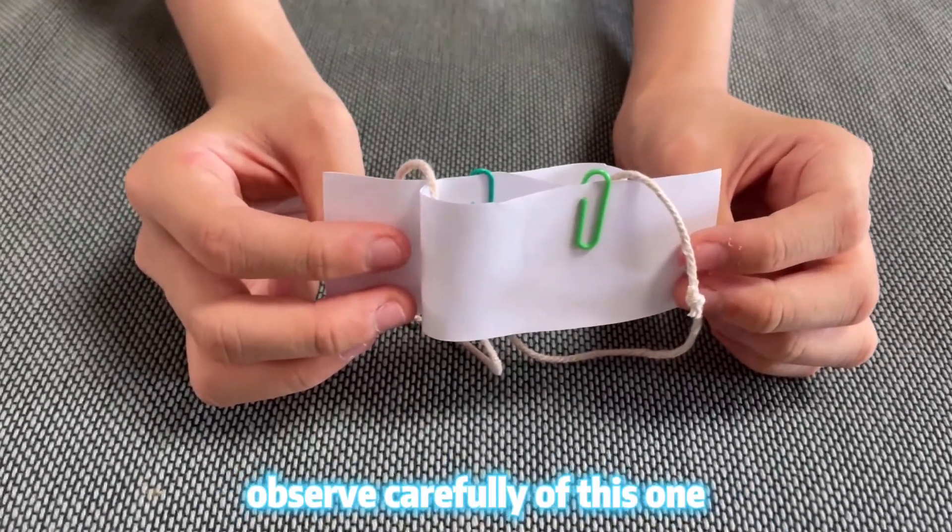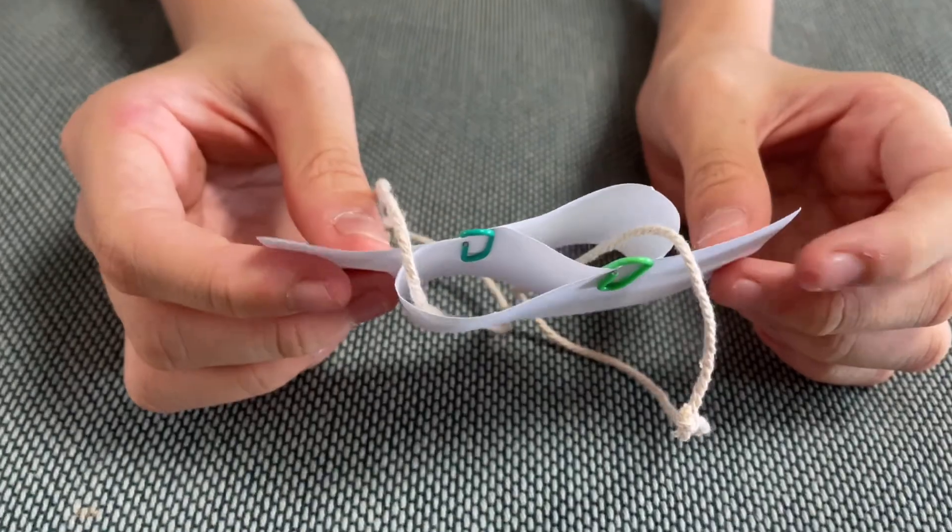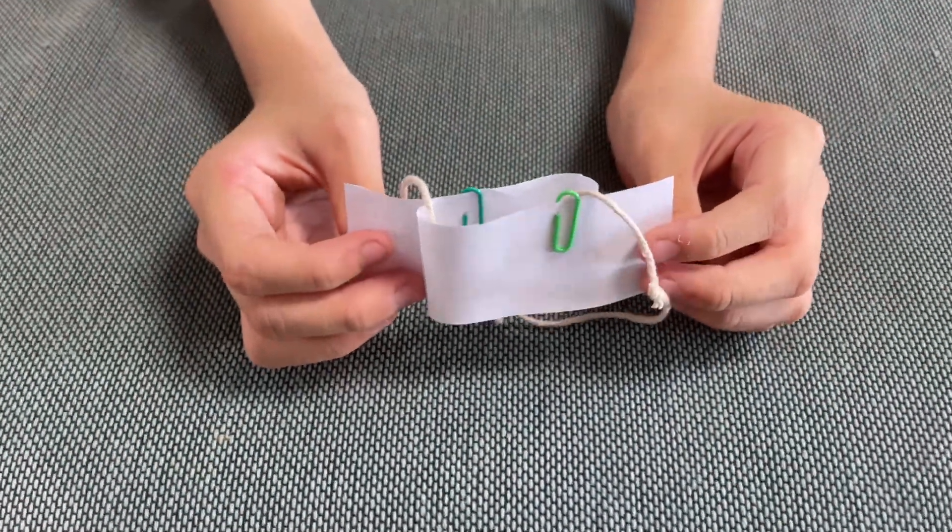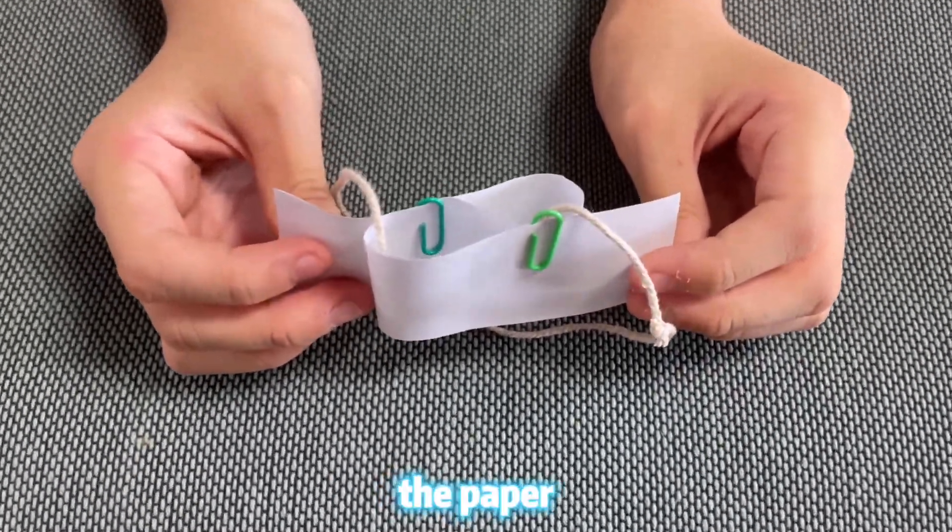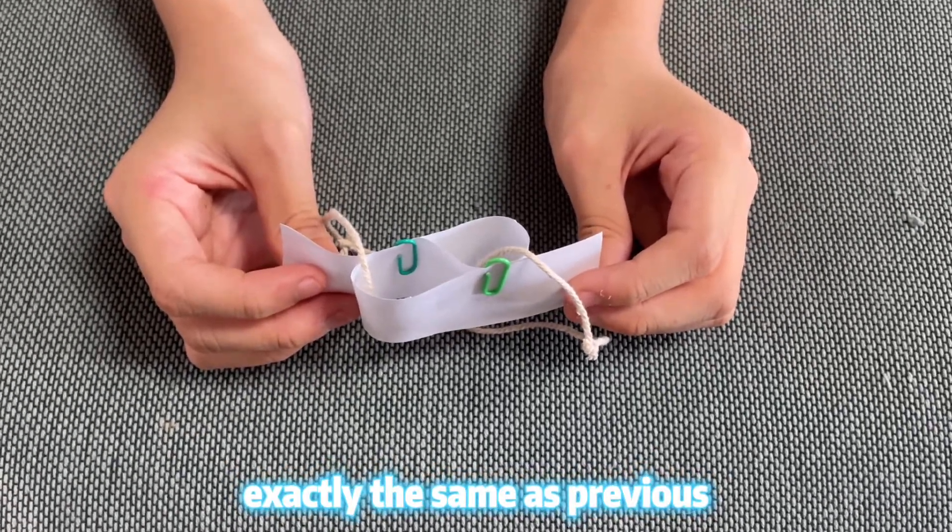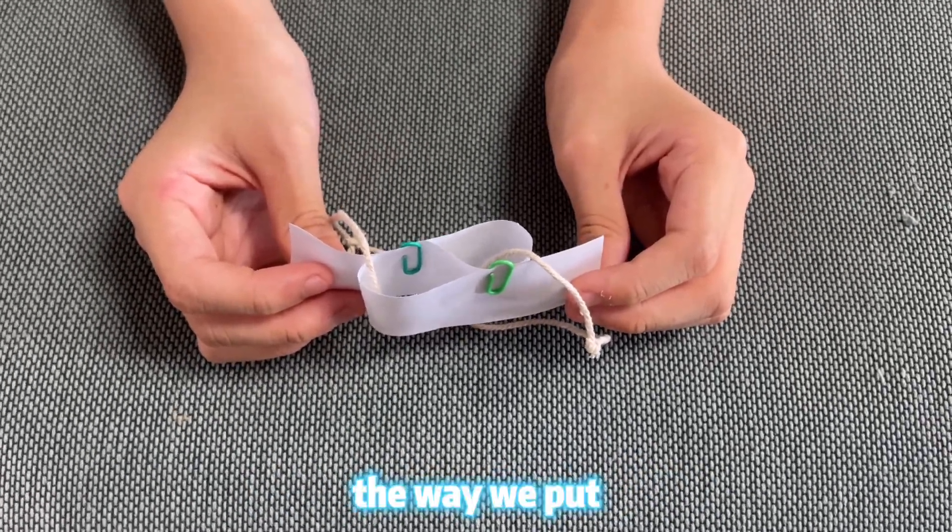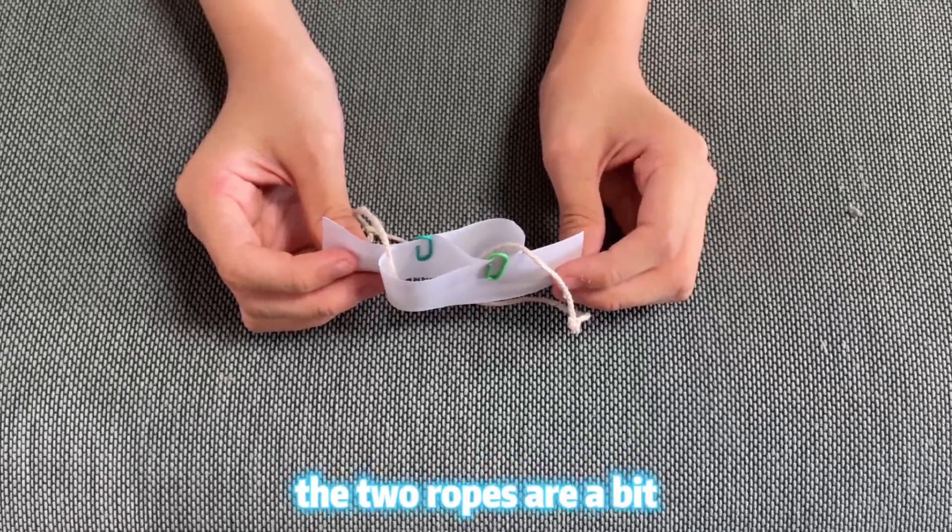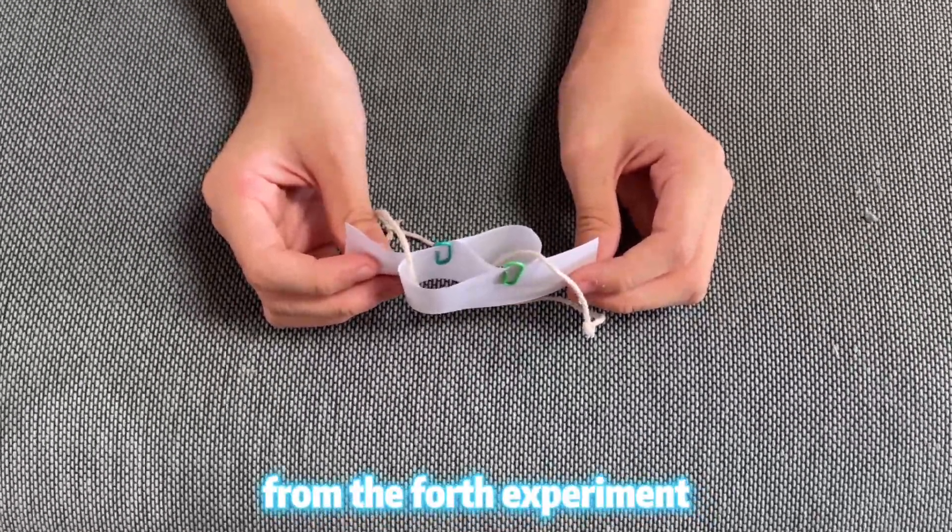Now, observe carefully of this one. The paperclips and the strip of paper are exactly the same as previous ones, but the way we put the two ropes are a bit different from the fourth experiment.